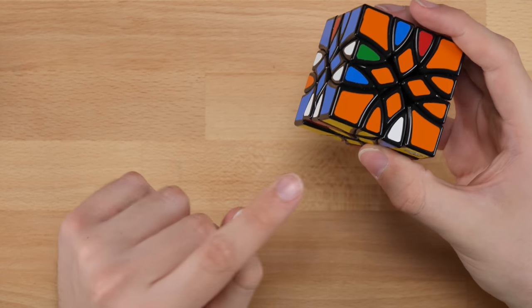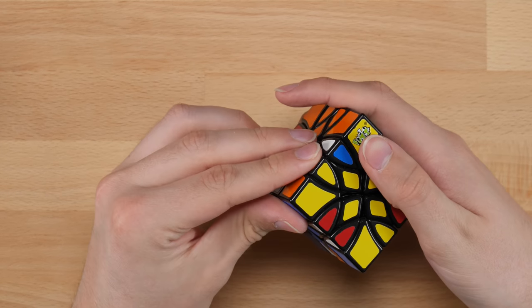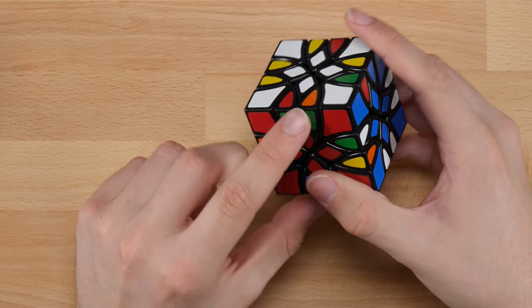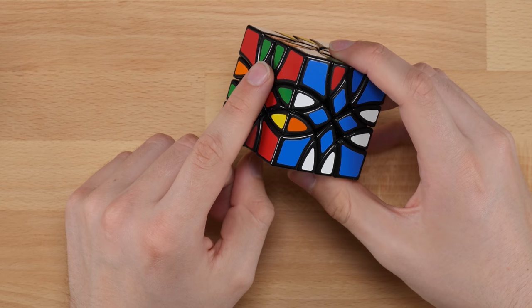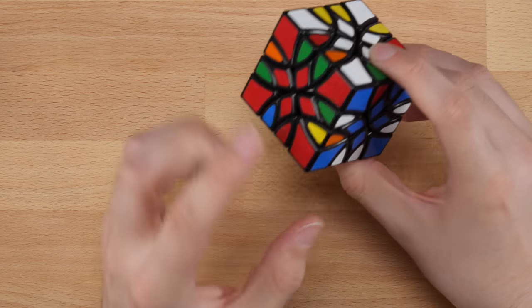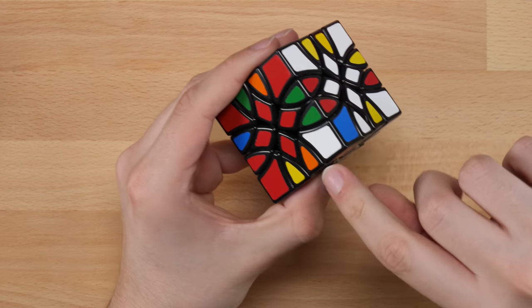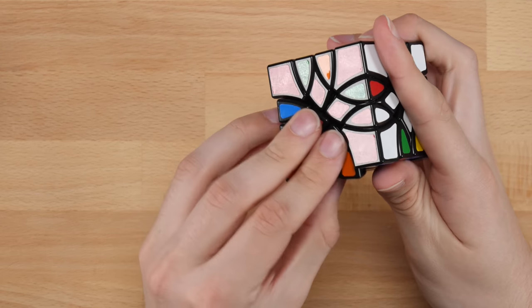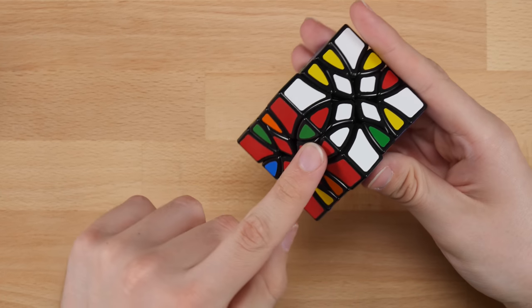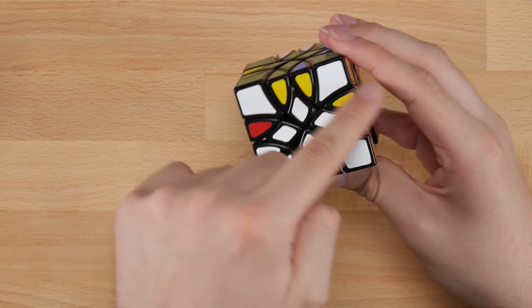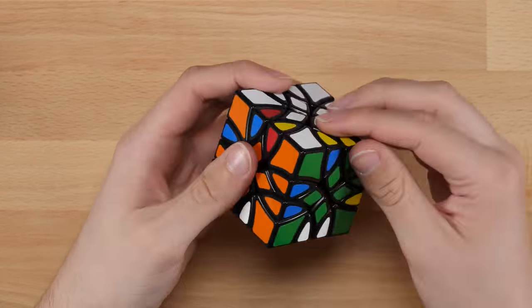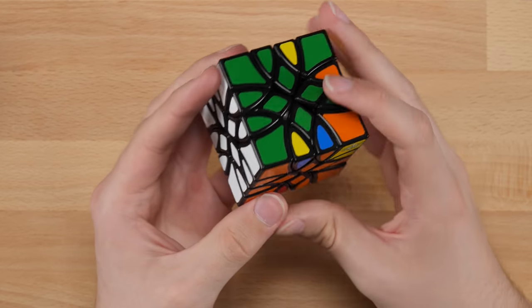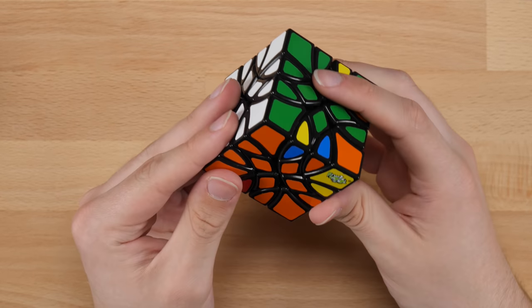So now we just have to put in these pieces, which should be quite simple. So I'll give you an example. If we want to put in this white and red piece right here, that's going to come from basically right here. So we turn down the spot it needs to go in. We turn up that piece, we bring that back and we turn this back. And so we just kind of do those kinds of inserts for all of the other pieces. All right. The white layer is done. So that was really not too bad at all.